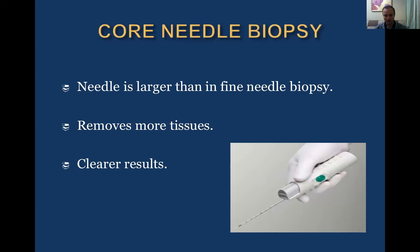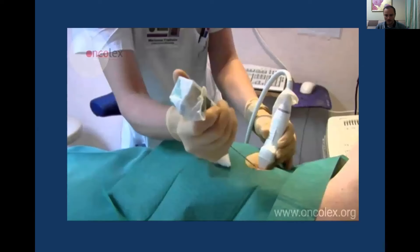Core needle biopsy uses a needle larger than in fine needle biopsy, removing more tissue — even a column of tissue. We send it for histological and immunohistochemical examination. Of course, the results are clearer because we have a histological specimen of the tumor tissue, so many questions can be answered. The procedure is done under ultrasound control using a special device.